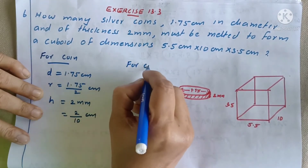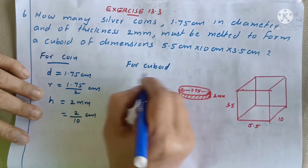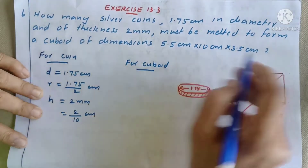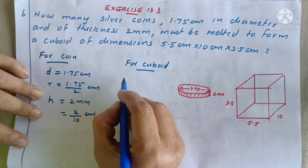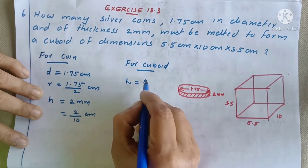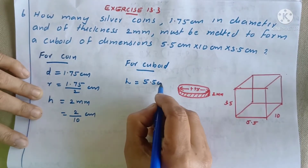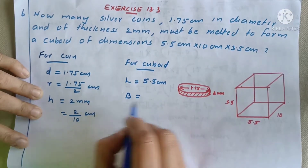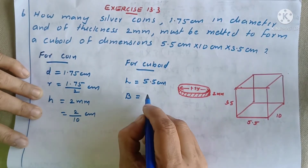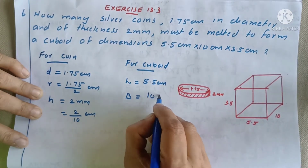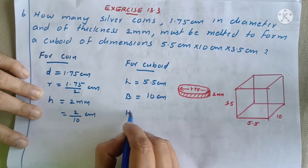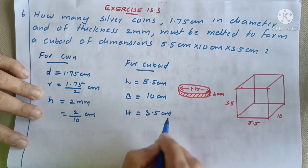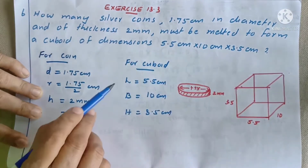For the cuboid: length, breadth, height. Length is equal to 5.5 centimeters. Breadth is equal to 10 centimeters. H is equal to 3.5 centimeters. That gives us length, breadth, and height.